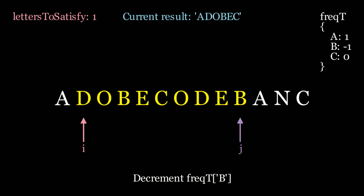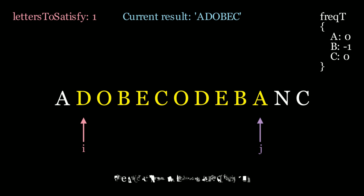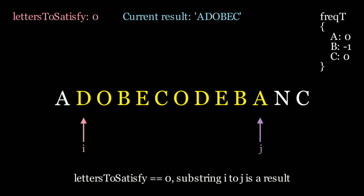We move j along and finally find an a. Is a in the hash map? It is, so we decrement the value at a from 1 to 0. We hit 0, which means we decrement letters to satisfy — we just satisfied a letter. Letters to satisfy is now 0, which means we have an answer. But our current substring from i to j — is it smaller than the previous result a, d, o, b, e, c? No, because adobec is smaller, so we keep the existing result.